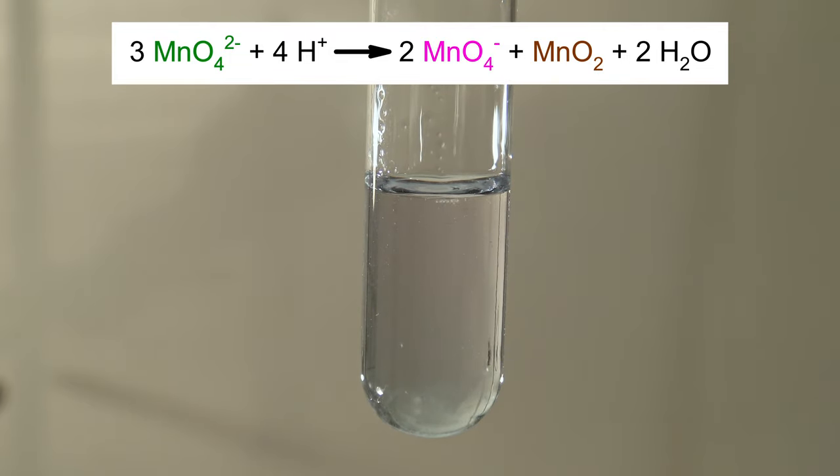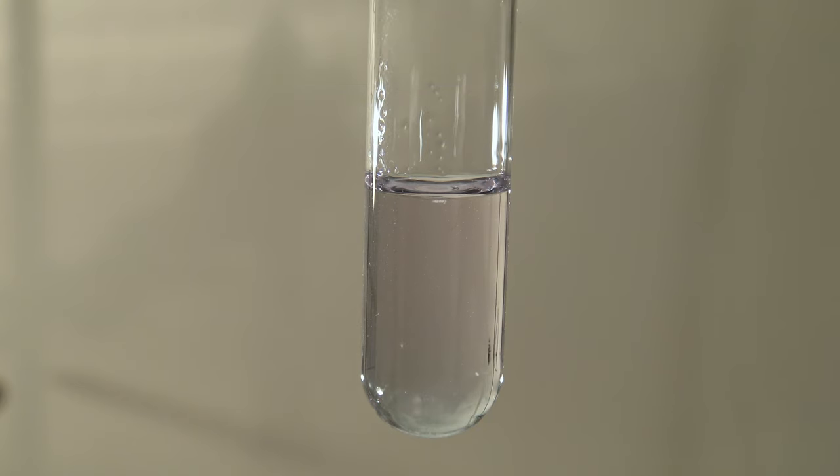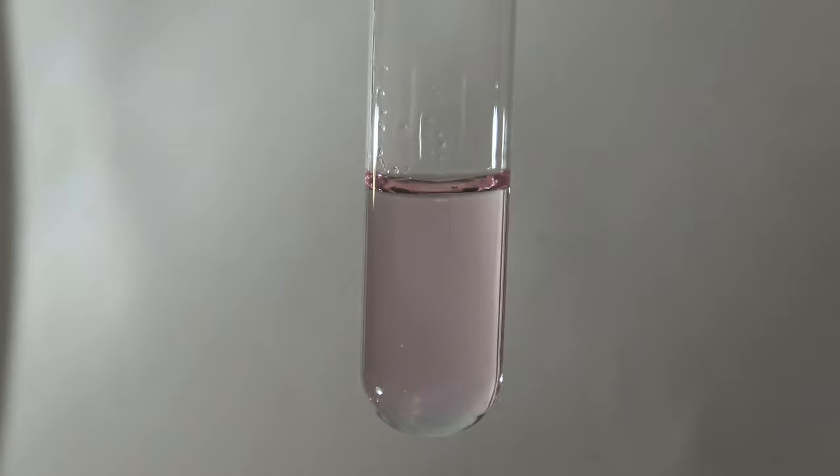The brown manganese dioxide is practically invisible at these low concentrations. Very dilute sulfuric acid could also be used here, but when too much acid is added, the permanganate is destroyed. This can't happen when using the bicarbonate.